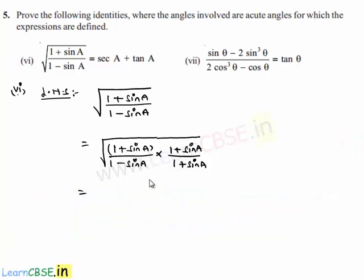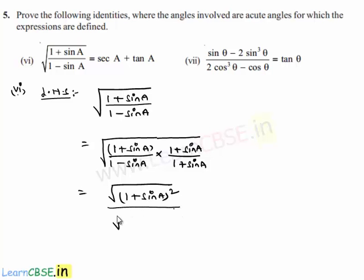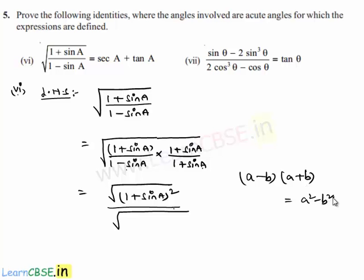Let us take the root for numerator and denominator separately. In the numerator we get square root of (1 plus sin A) whole square, and in the denominator we get 1 minus sin A into 1 plus sin A, which is in the form of (A minus B)(A plus B), which equals A squared minus B squared.